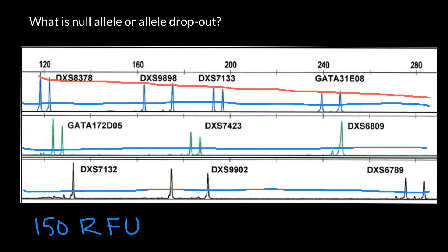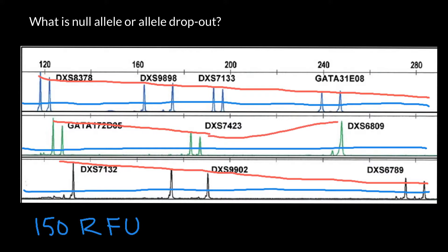We can also draw a declining line in the third panel, but the picture there is slightly different. First it goes down just like in the first and third panel, but then it goes up again. This gives us information that we should probably expect an allele peak here that is going to be smaller — roughly where this declining line continues.